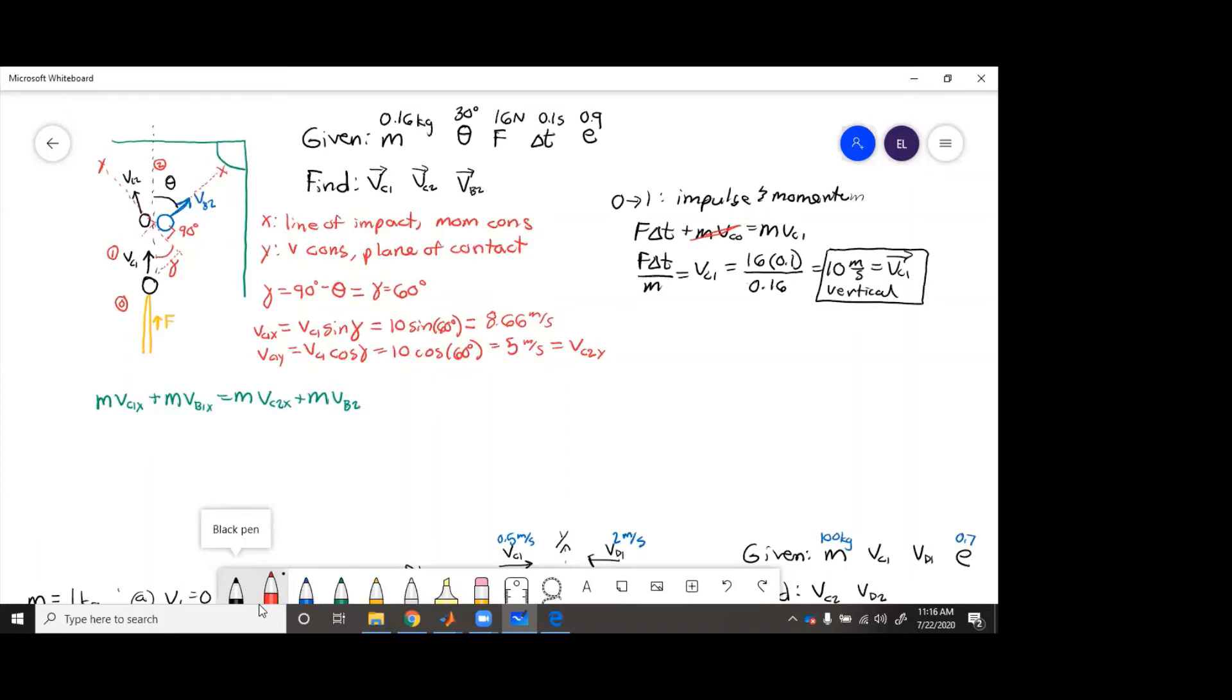Well, originally, vb1 was not moving, so we get rid of this. And then conveniently, we cancel all these masses. So then we're just left with vc1x, which we got here. 8.66 equals vc2x plus vb2.